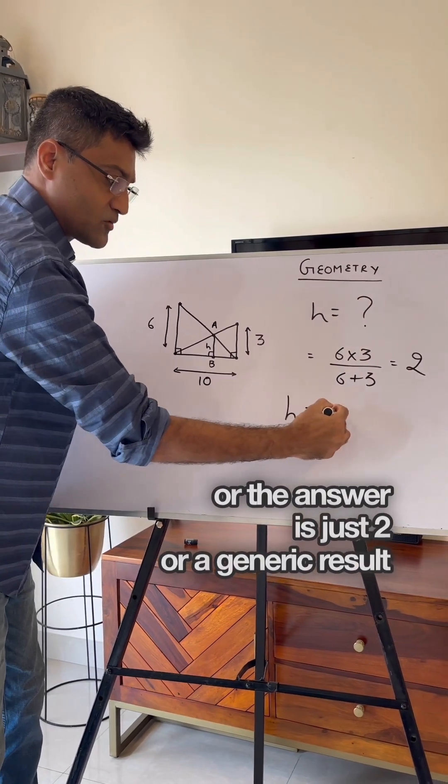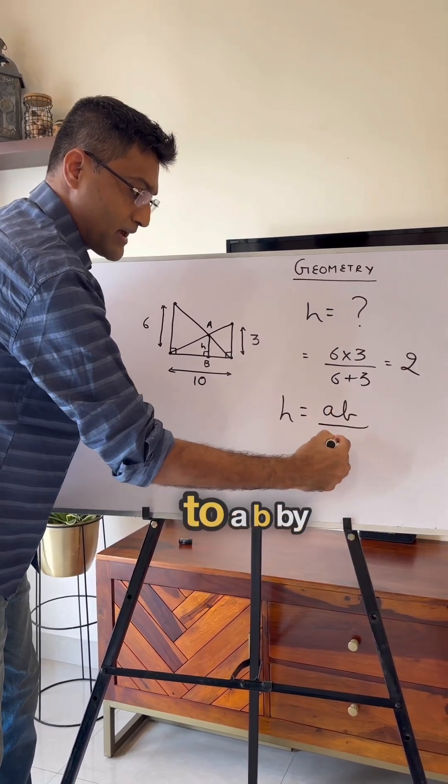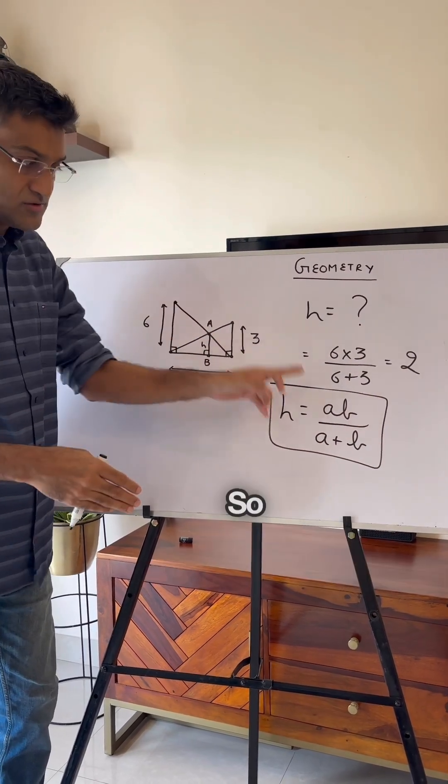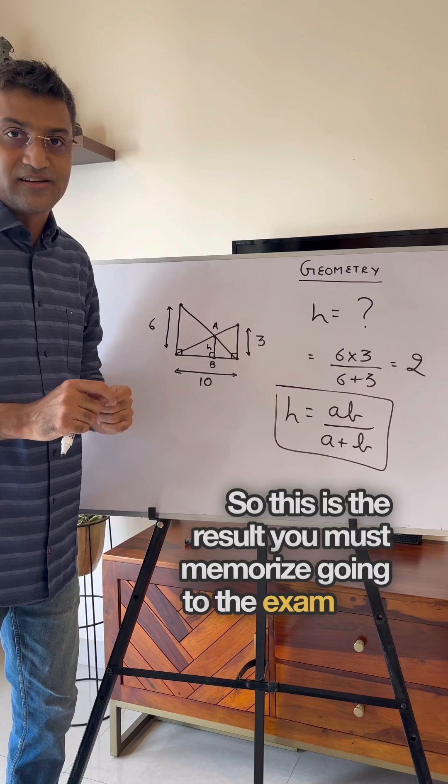Or a generic result would be h is equal to ab by a plus b, where a is let's say this length and b is this length. So this is the result you must memorize going to the exam.